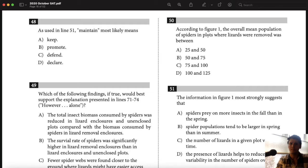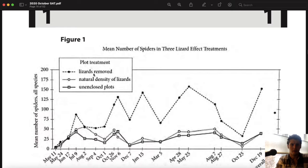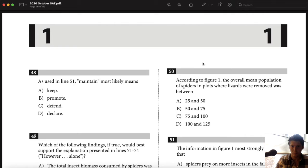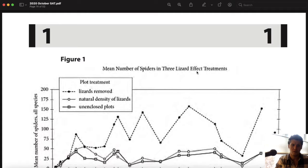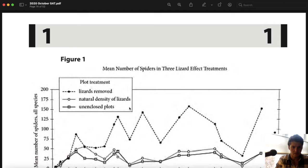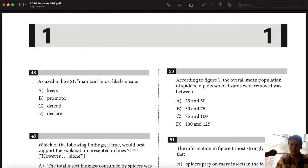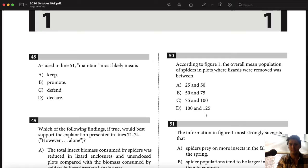According to figure one, the overall mean population of spiders in plots where lizards were removed was between. The mean number of spiders of all species. So the overall mean, I don't know, it's like in the middle here. I would say like between the lows and the highs. So I don't know, about 100? 75 and 100, I would say? Or 100 and 125? I would say it's between 100 and 75. That's just sort of an eyeball test thing. Because I thought it was a little bit below 100.